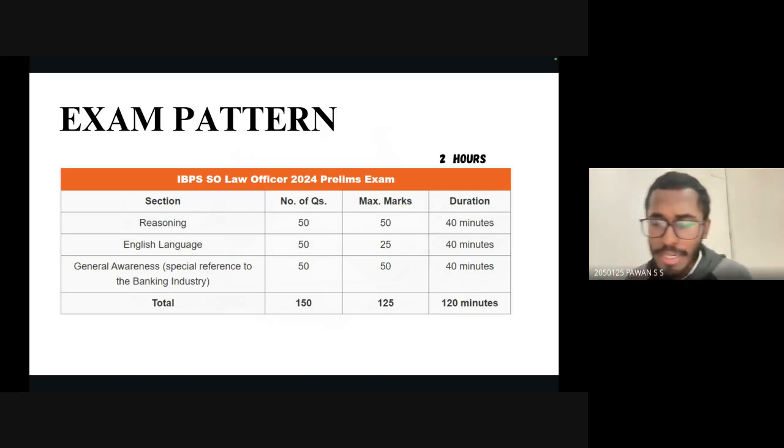Starting with logical reasoning, the number of questions would be up to 50, and maximum marks you can score is up to 50. I'll show you areas where you can prepare for logical reasoning, and I'll give you insights on free material content. You have a time duration of 120 minutes total—40 minutes for logical reasoning, 40 minutes for English language, and 40 minutes for general awareness.